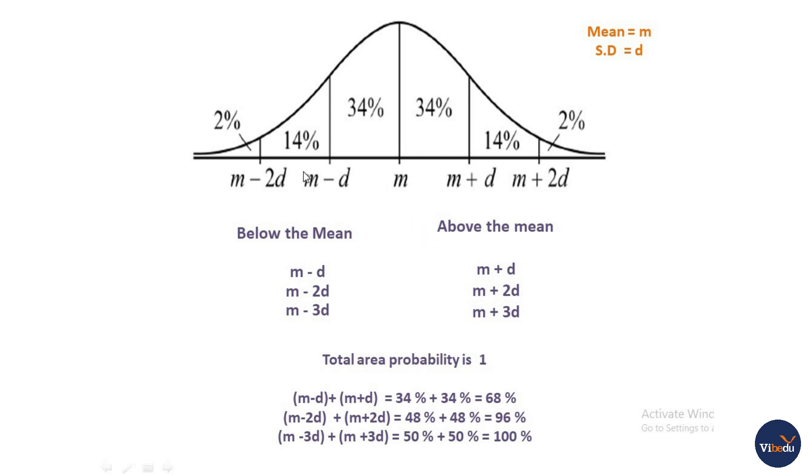This is the solution. In the normal distribution, this is a bell shape curve. It is a symmetrical distribution, so two parts are equal. This total area probability is 1. In the normal distribution, the mean is denoted by M, standard deviation is denoted by D. This M is the center value. Left tail is the left tail, this is the right tail.